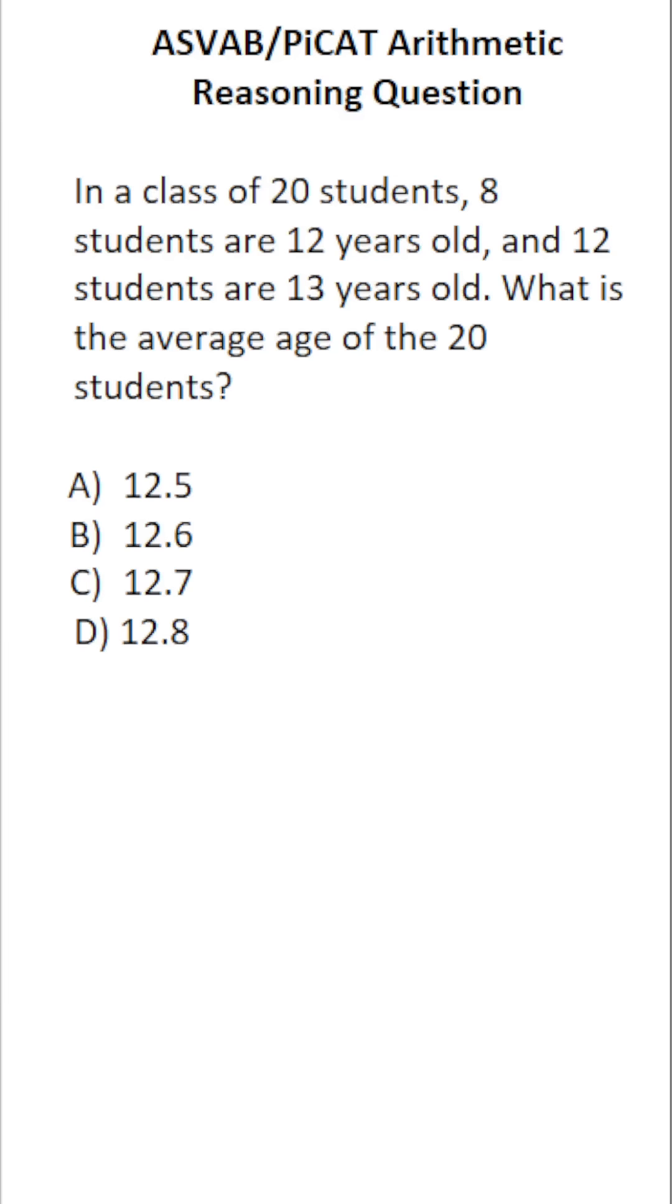This arithmetic reasoning practice test question for the ASVAB and PiCAT says, in a class of 20 students, 8 students are 12 years old and 12 students are 13 years old. What is the average age of the 20 students?